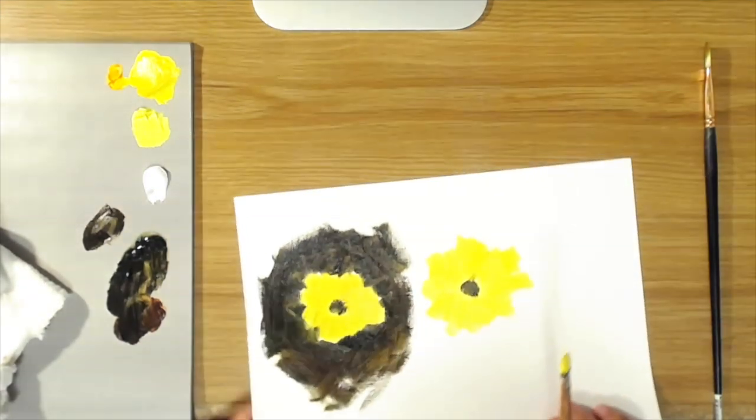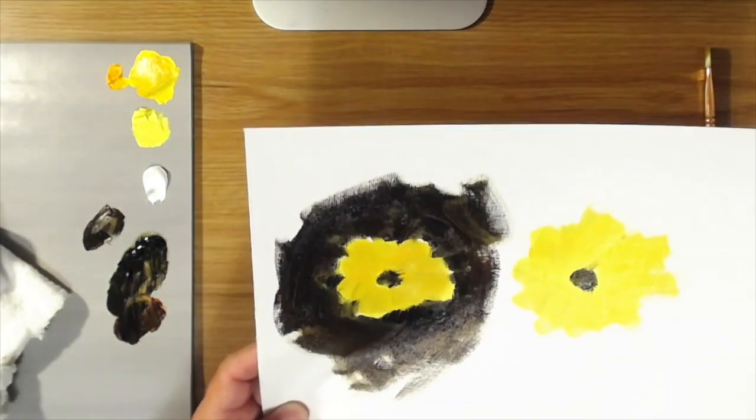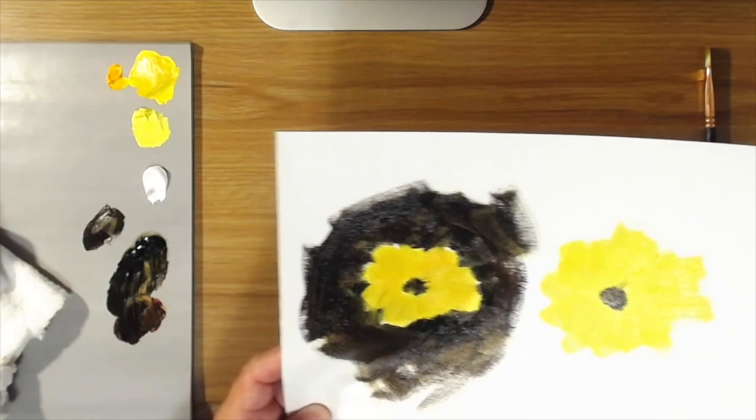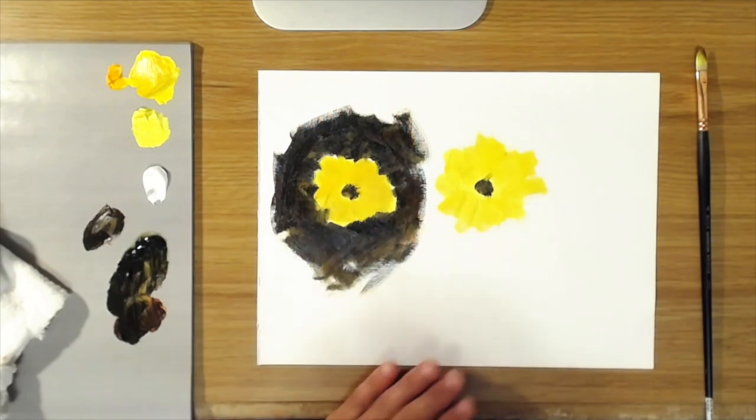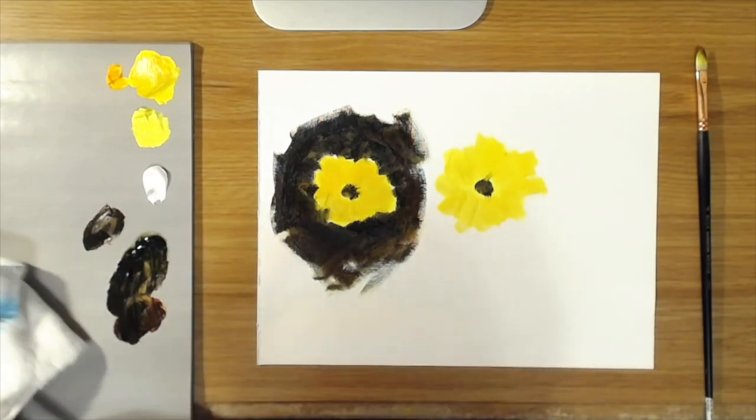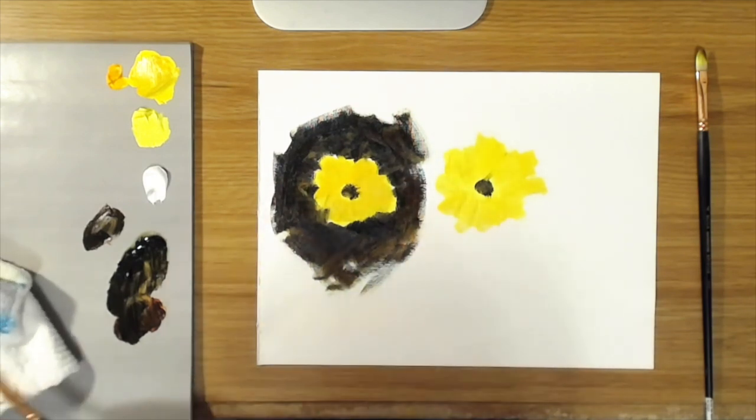So that the yellows look the same, it looks like you have the same yellow on the different background even though this one's really darker than that one.